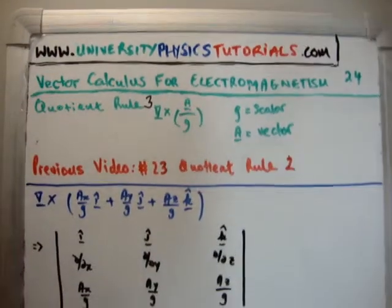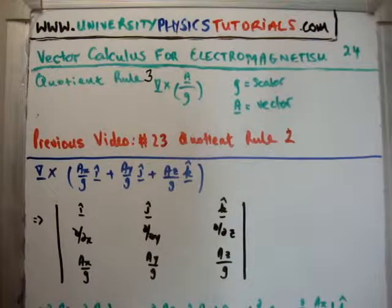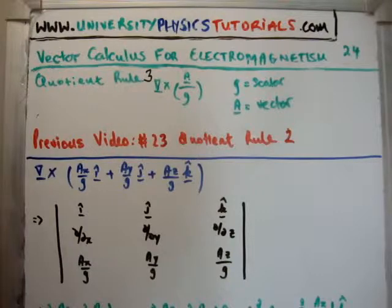How do we do this? Well, you can look at my video number 3, where I discussed how to take the cross product or the curl. But we're going to take the determinant of this particular 3 by 3 matrix. It's very straightforward. So, in doing that, we're going to get a vector field again, of course.